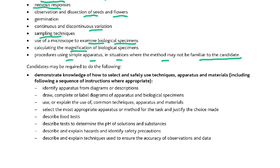Then: demonstrate knowledge of how to select and safely use techniques, apparatus and materials including following a sequence of instructions where appropriate; identify apparatus from diagrams or descriptions; draw, complete or label diagrams of apparatus and biological specimens; use or explain the use of common techniques, apparatus and materials; select the most appropriate apparatus or method for the task and justify the choice made; describe food tests; and describe tests to determine the pH of solutions and substances.